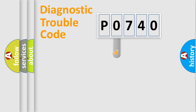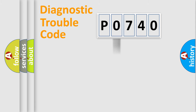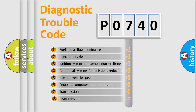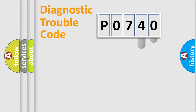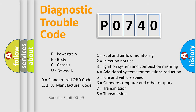This distribution is defined in the first character of the code. If the second character is expressed as zero, it is a standardized error. In the case of numbers 1, 2, or 3, it is a more specific car-manufacturer expression. The third character specifies a subset of errors. This distribution is valid only for the standardized DTC code, and only the last two characters define the specific fault of the group.